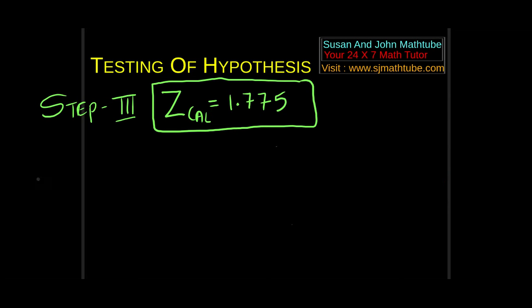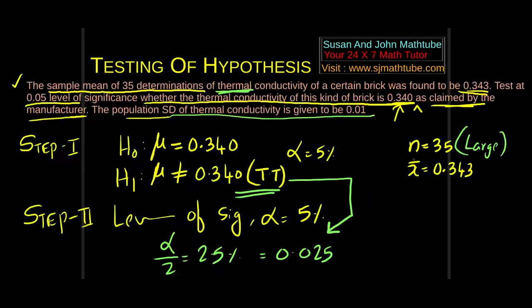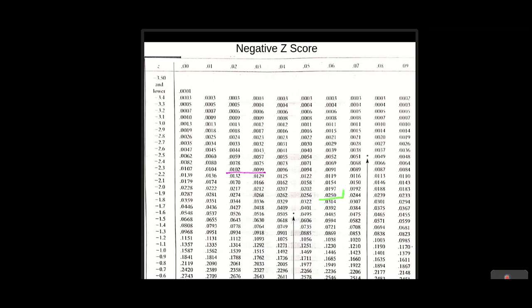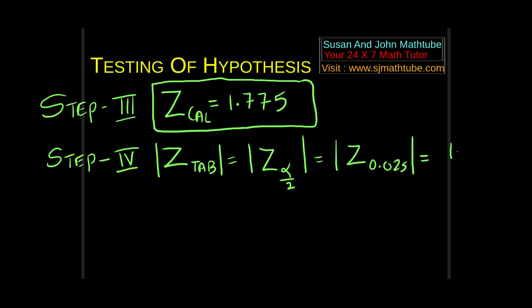Step number 4: tabulate Z. The format is |z(α/2)| = |z(0.025)|. Looking at the table, the answer is −1.96, but since I took the modulus, z tabulated = 1.96.